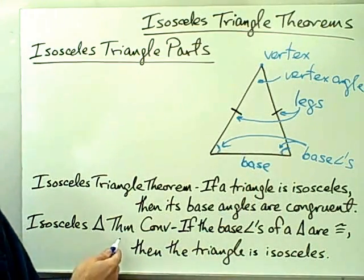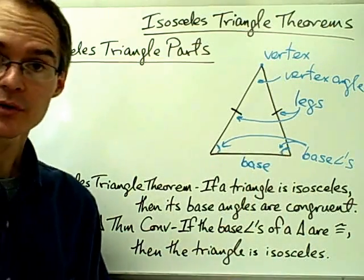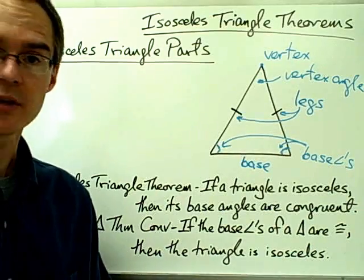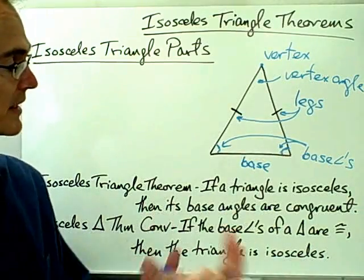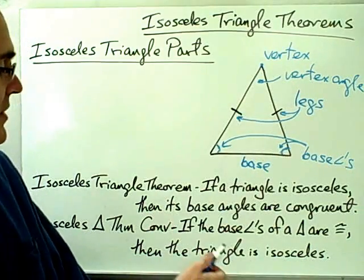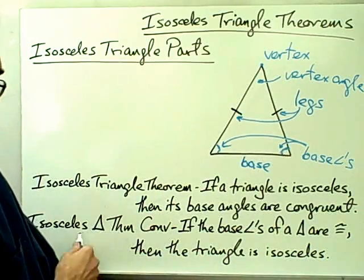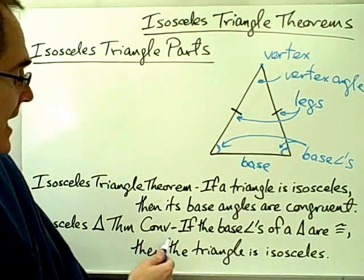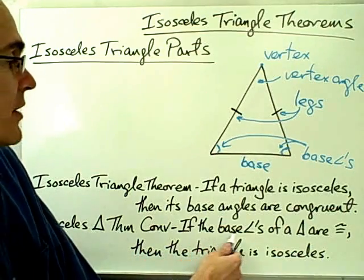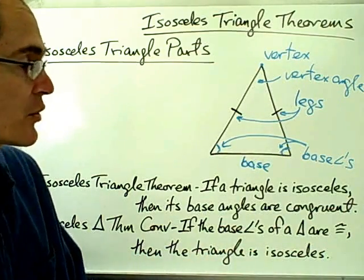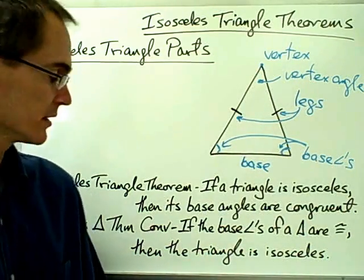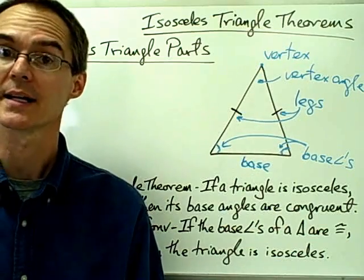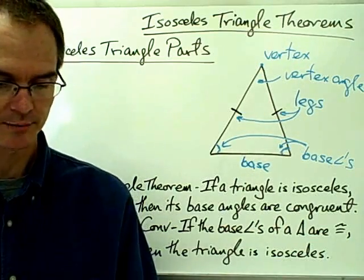The isosceles triangle theorem converse — we know how to form the converse of a theorem: we just swap the hypothesis and conclusion. So the converse of the isosceles triangle theorem says: if the base angles of a triangle are congruent, then the triangle is an isosceles triangle.